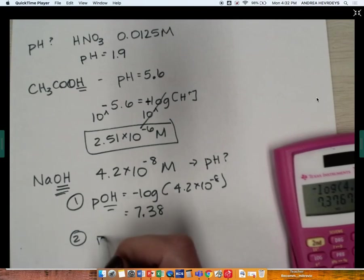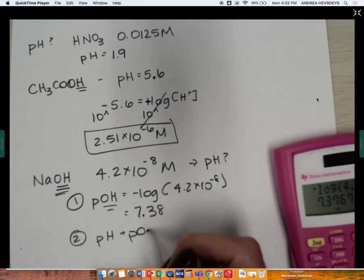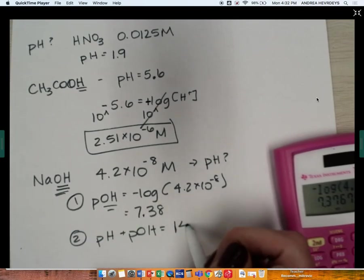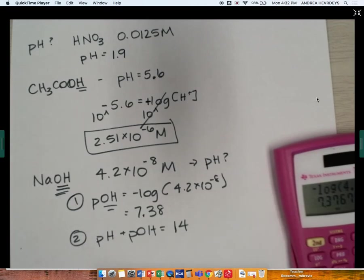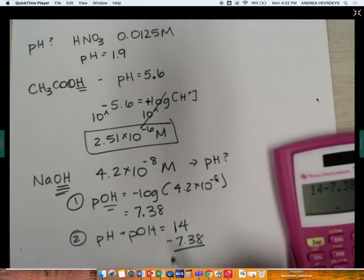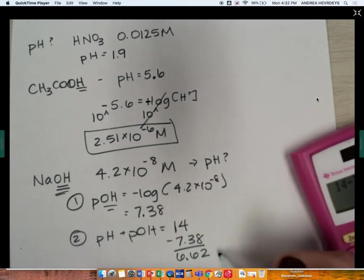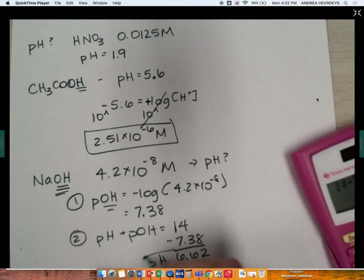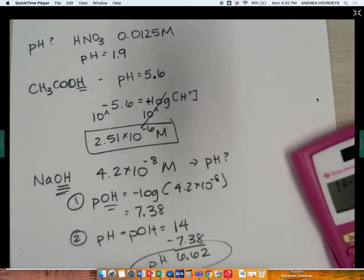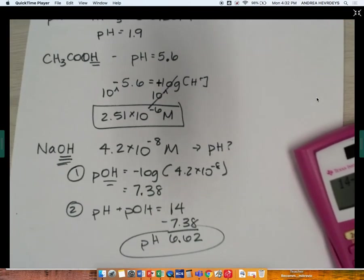But then I know that pH plus the pOH is going to equal 14, which is my pH scale. So all I have to do is subtract over. So 14 minus the 7.38 is going to give me 6.62. So that's going to be my pH of my sodium hydroxide solution.